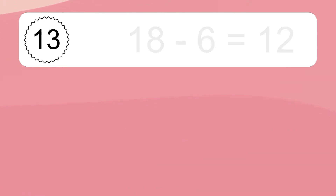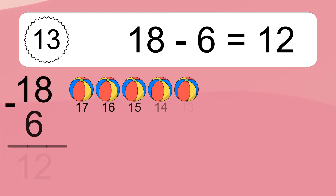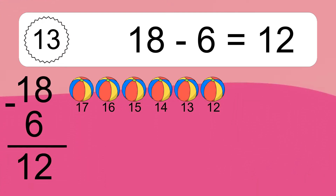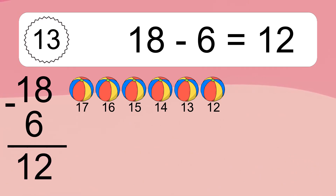18 minus 6 equals what? 18 minus 6 equals 12. Let's count it: 17, 16, 15, 14, 13, 12.